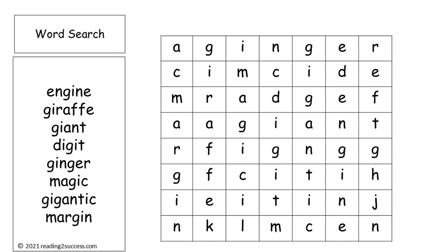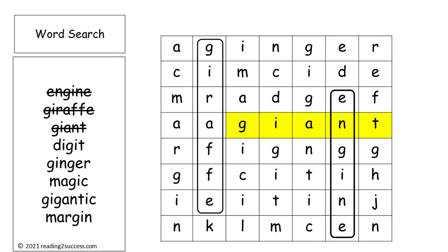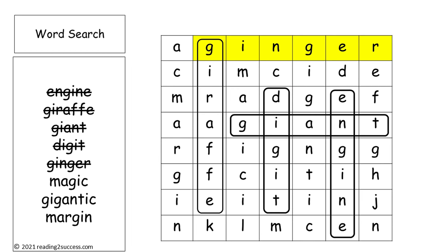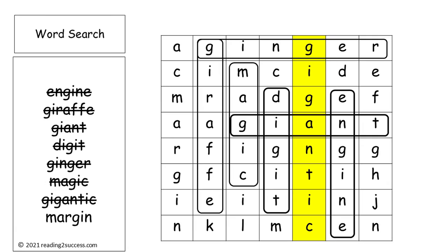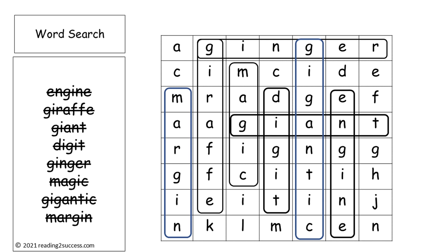Just as a crossword puzzle is a great way for kids to recognize, learn to read, and learn to spell words, so is a word search. That's what we're going to do with the G-I pattern words that make the soft G sound. We have: engine, giraffe, giant, digit, ginger, magic, gigantic, and margin. And here is the completed word search.